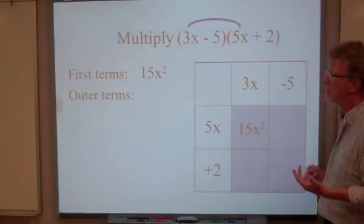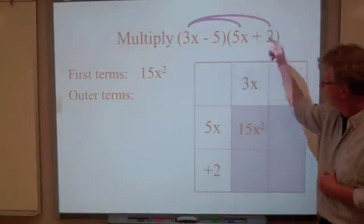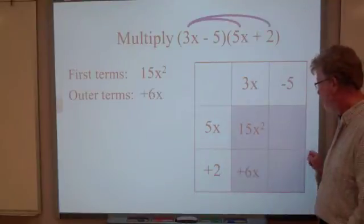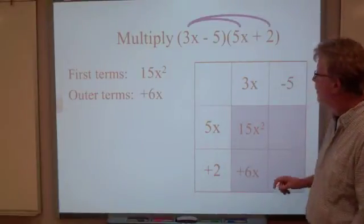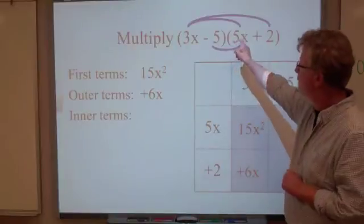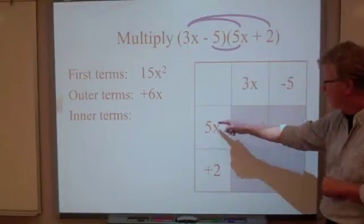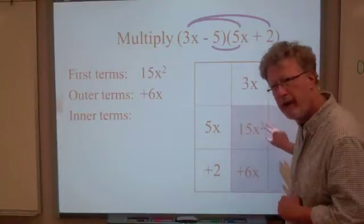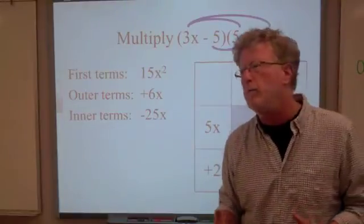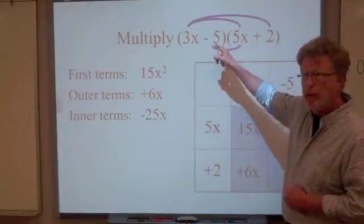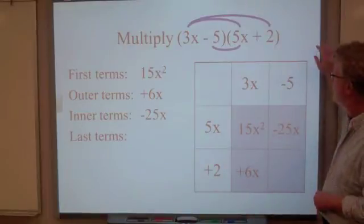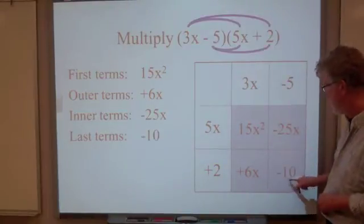Now, the second term, the second multiplication is going to be the outer terms. Our 3x comes up 2. We've got 3x and 2. So the answer is going to end up being right here, and we get 6x. Now, remember the next part of FOIL? I for inner terms. And our inner terms are the negative 5 and the 5x. We've got our negative 5 here, our 5x here. So this cell is where we'll find the answer to that problem, and we have negative 25x. And finally, we have the last terms. And that would be the last term in the first binomial and the last term in the second binomial. We multiply those out for the square and we get negative 10.